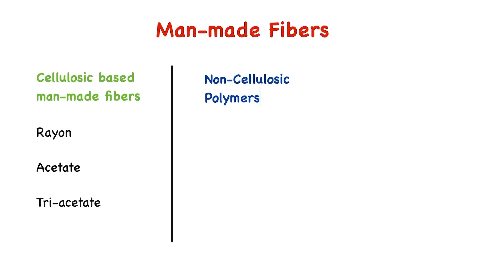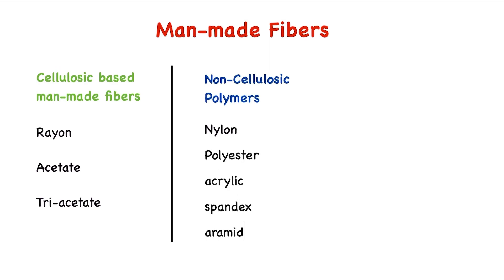Non-cellulosic polymer fibers: these are fibers which are made of different chemical compositions of polymers. Examples of such fibers are nylon, polyester, acrylic, spandex, and aramid.